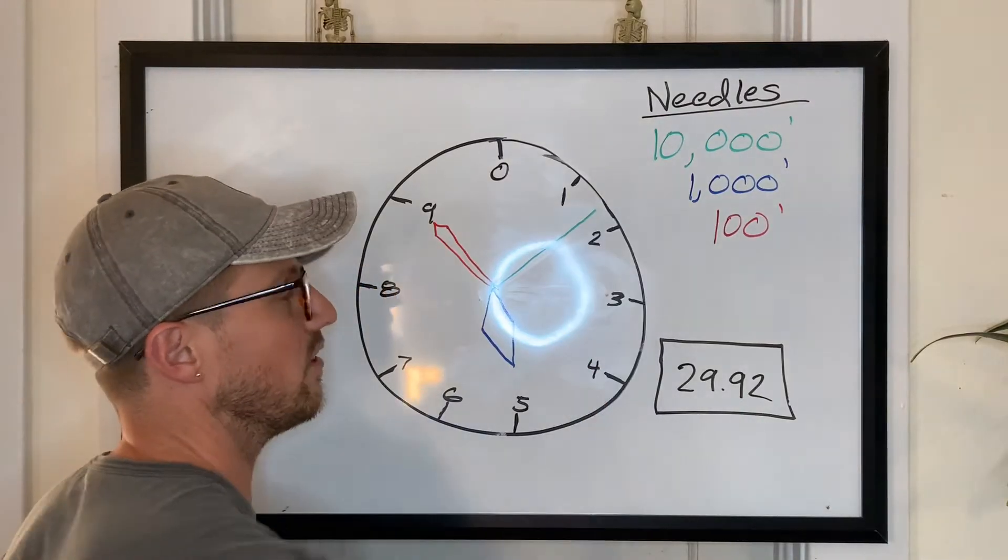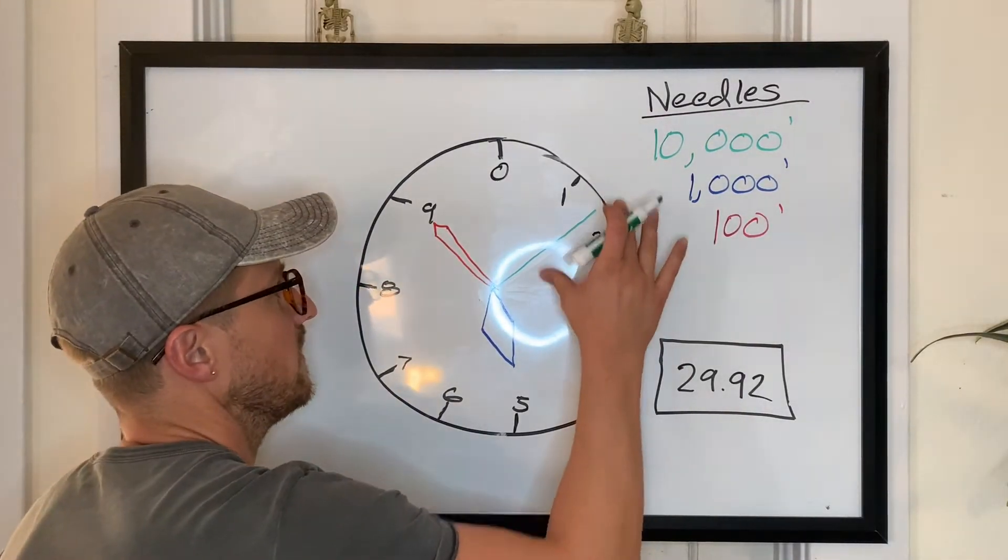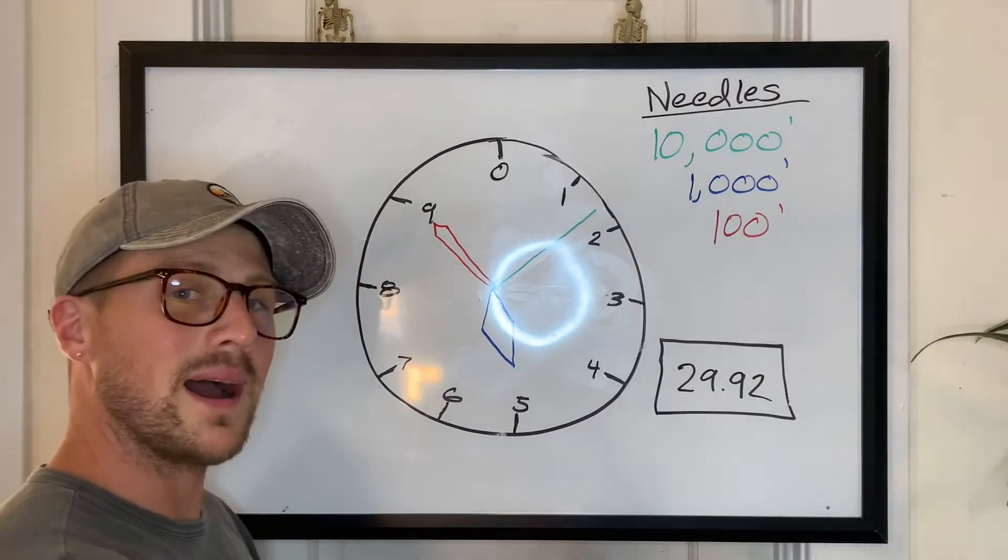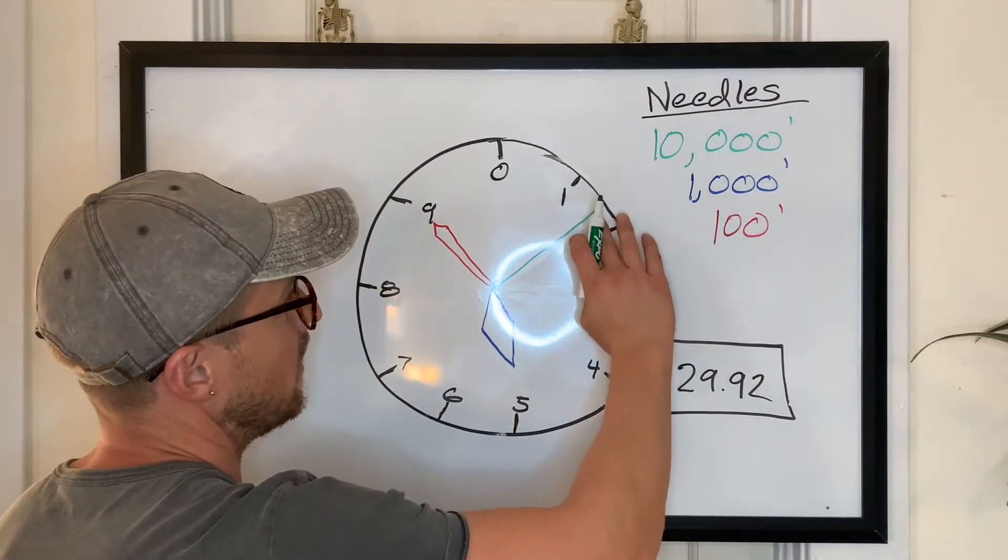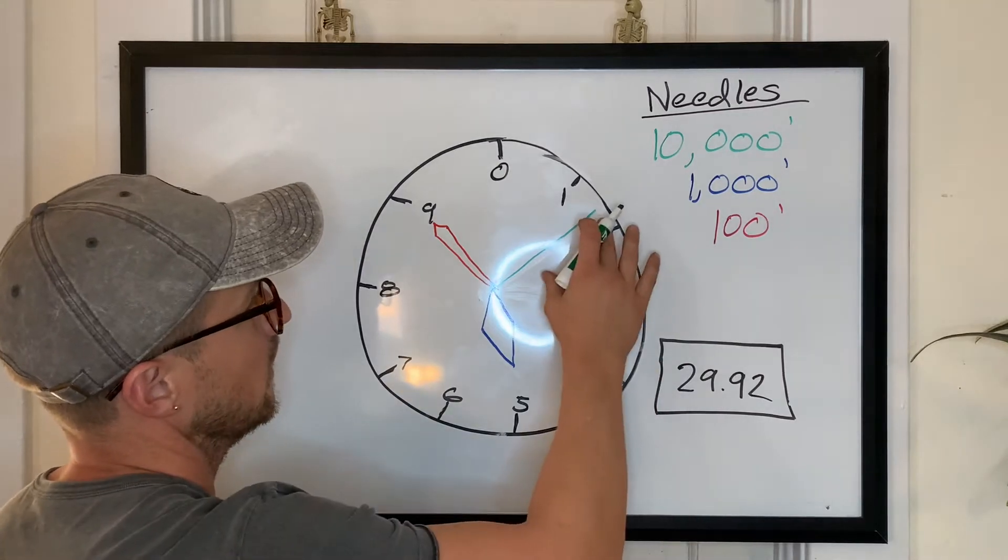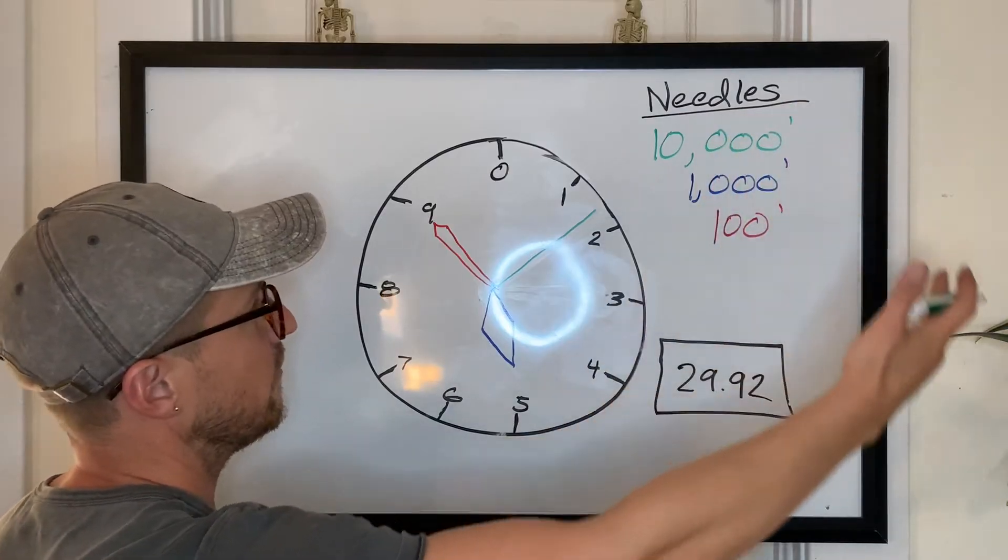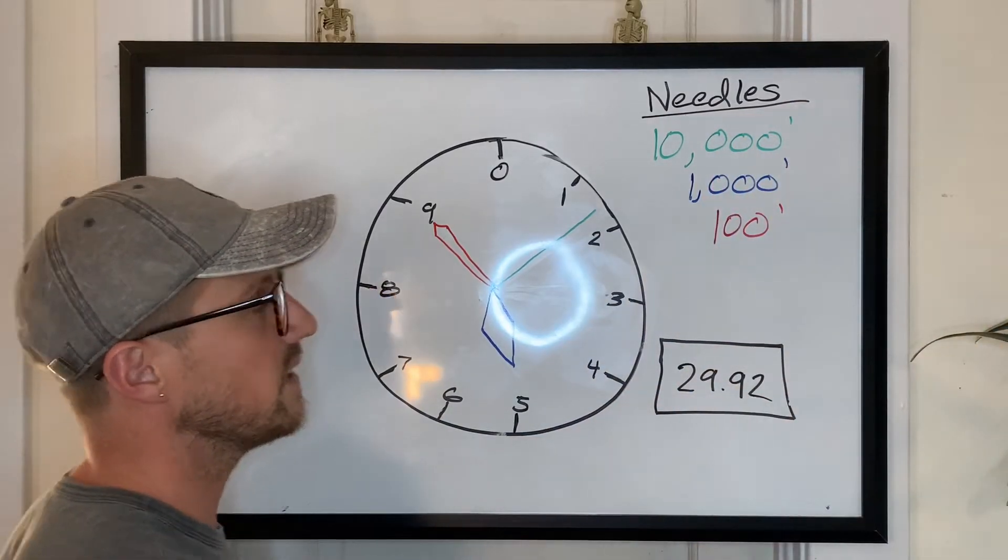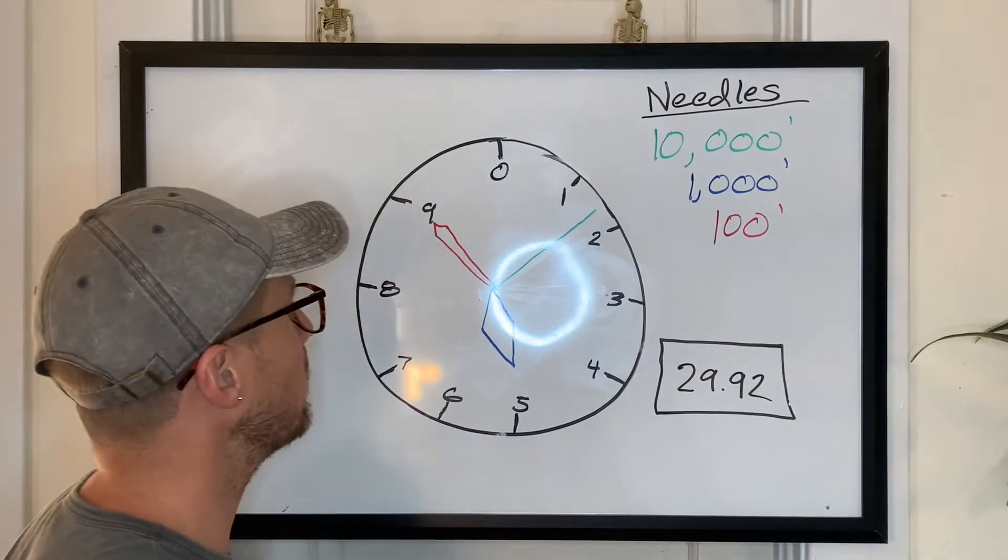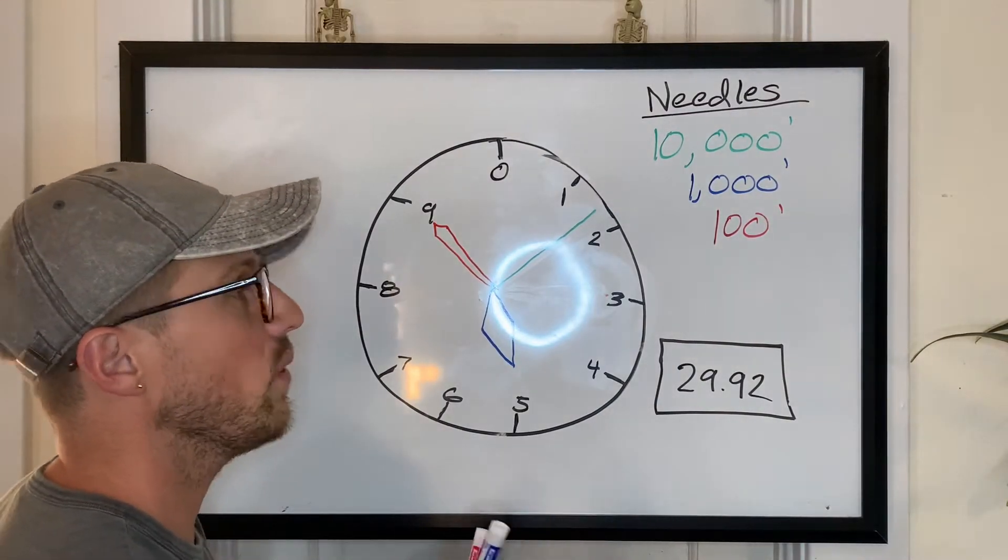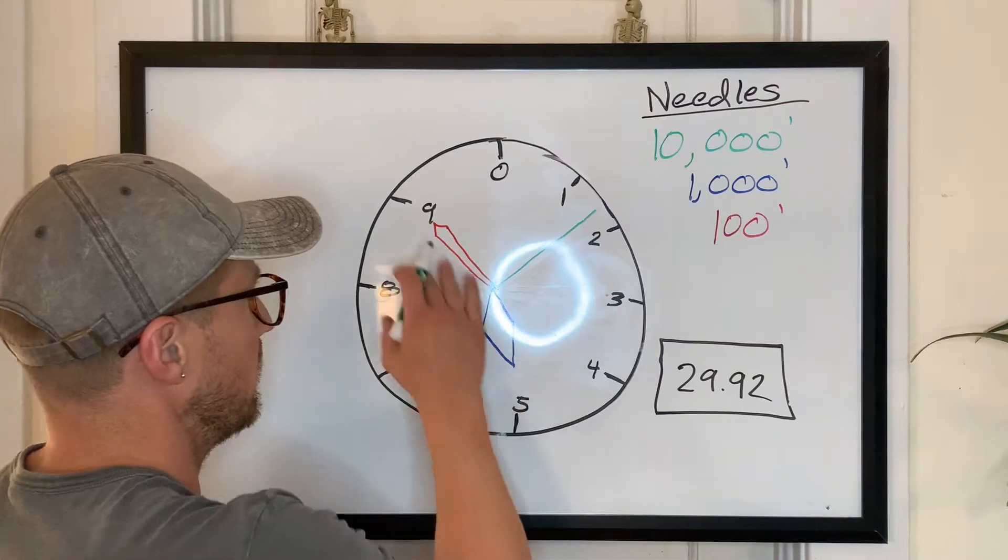Let's start with the 10,000 foot needle. The 10,000 foot needle by itself is going to tell you the exact altitude in terms of 10,000 feet. But as pilots, as we're flying, it's kind of hard to tell just off one needle. This is 1.6 ish 10,000 feet, so I know 16,000, 16,000 feet or something like that. So we want to be more accurate than that.